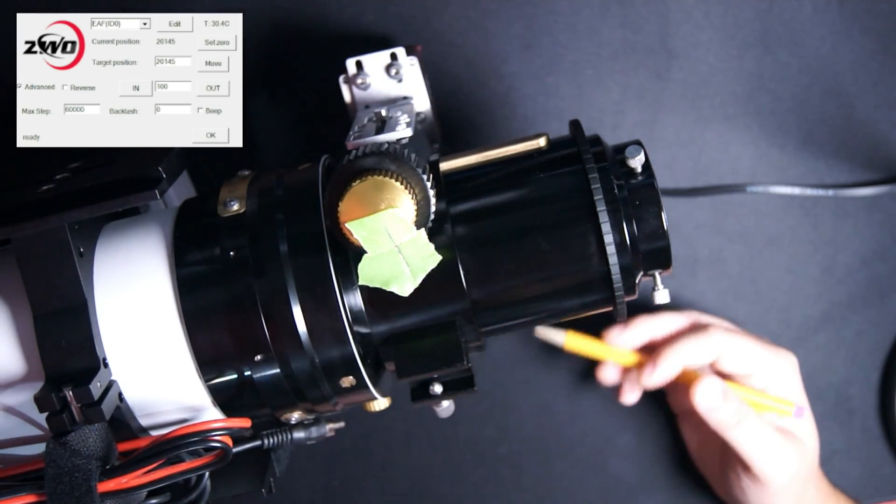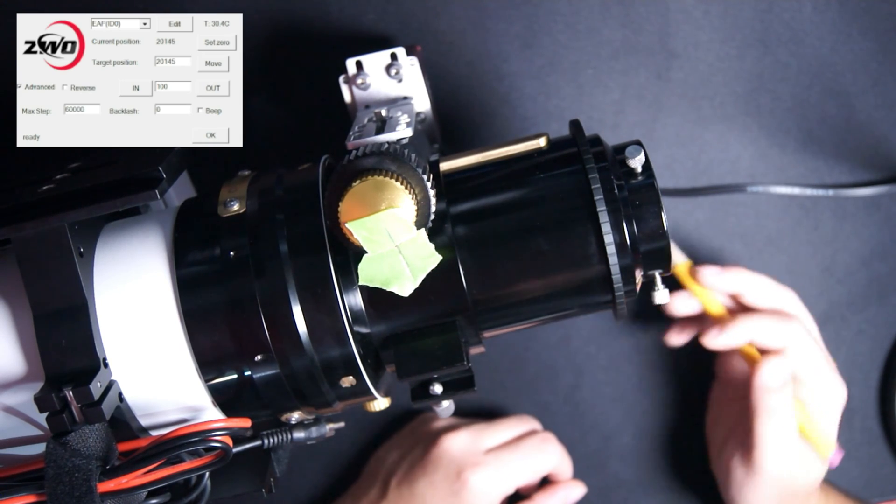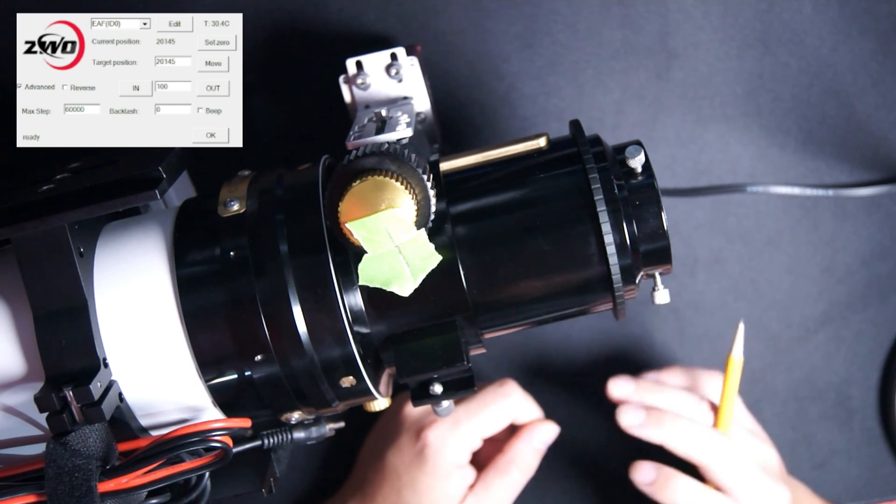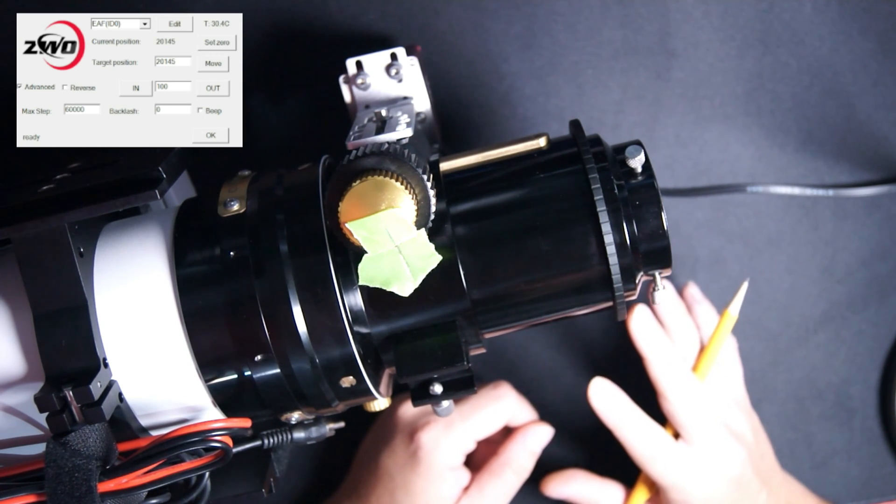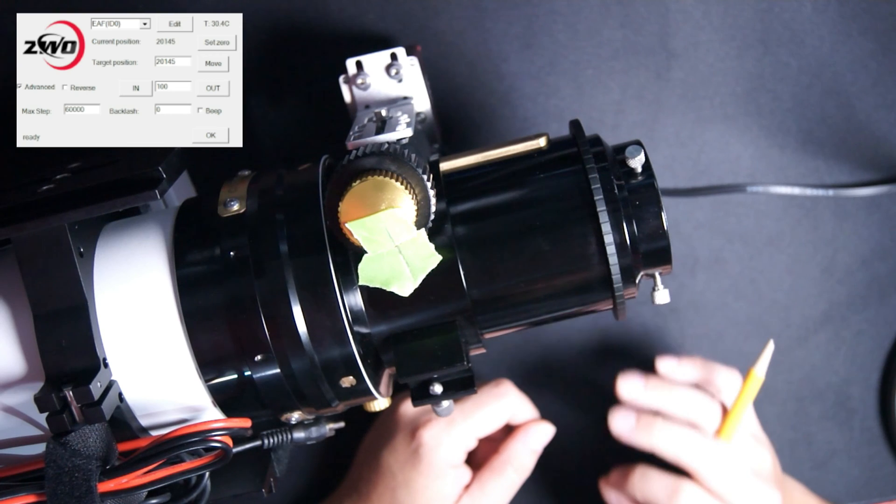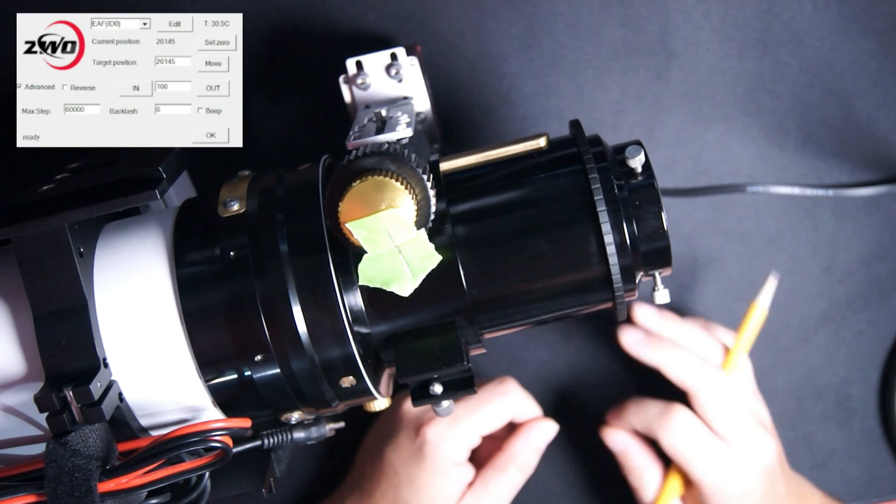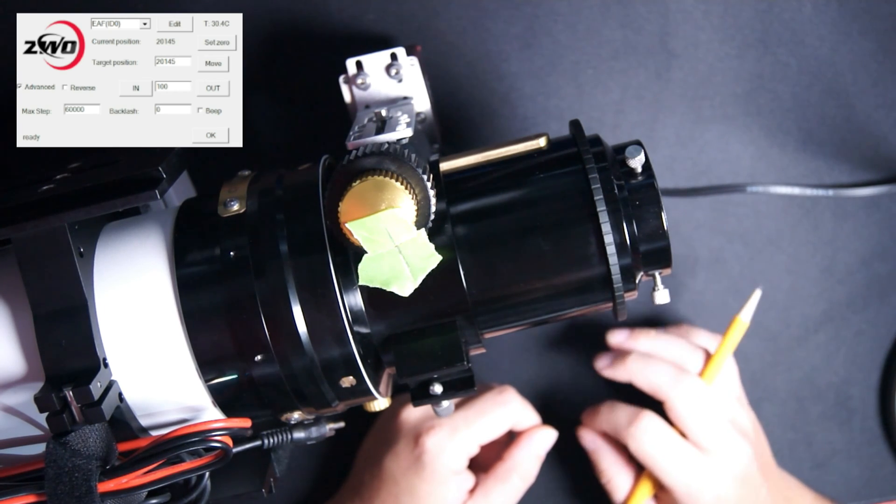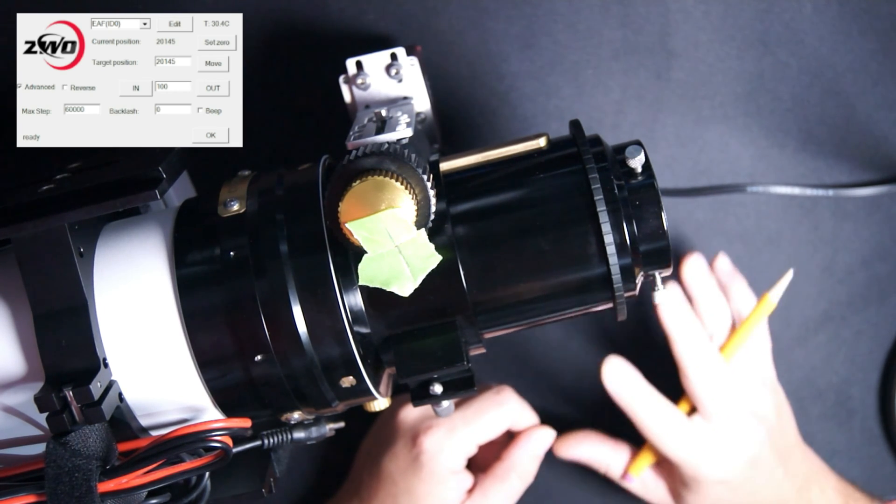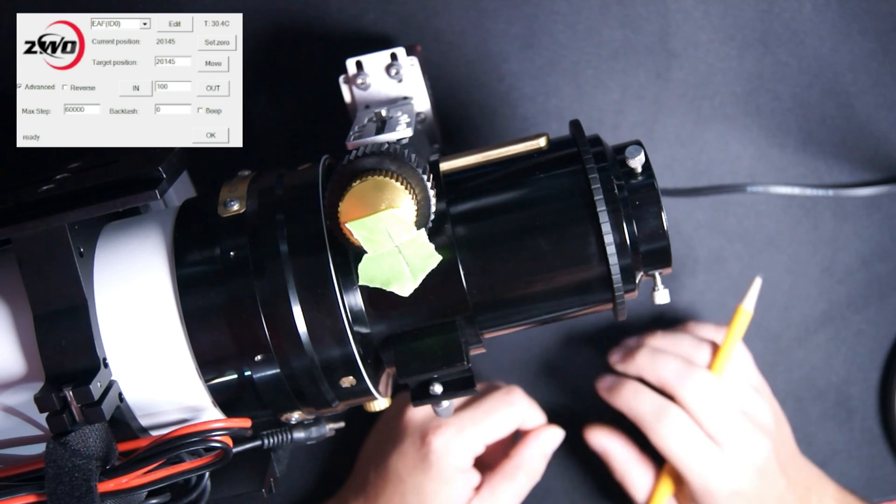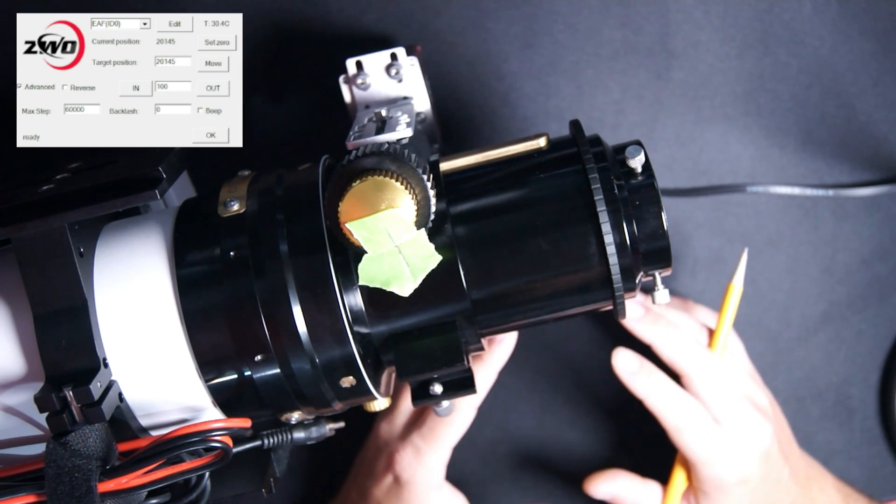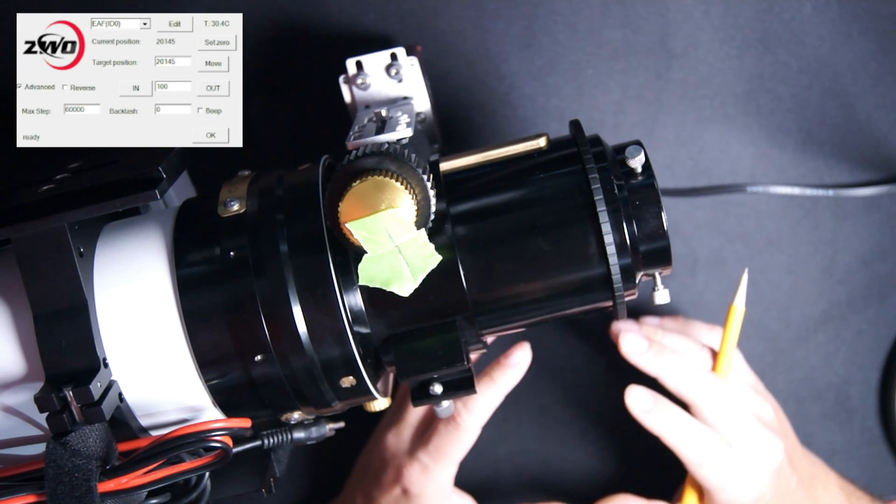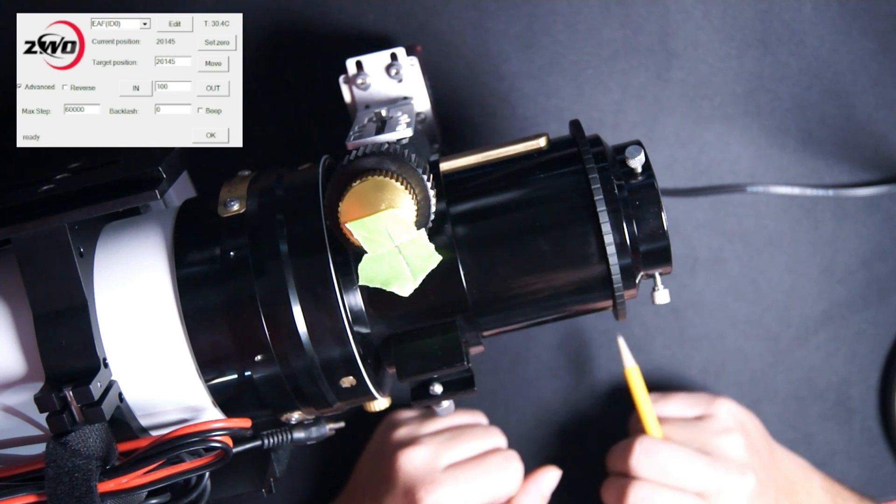To demonstrate the backlash compensation, I'm going to be using the native ZWO driver. However, I would recommend that when you set this up for your own telescope, you set it up in your imaging software. Some of the software out there will get a little bit confused if you have a backlash compensation set up in the native driver itself. Each imaging software suite has its own routine and its own method for compensating for backlash.